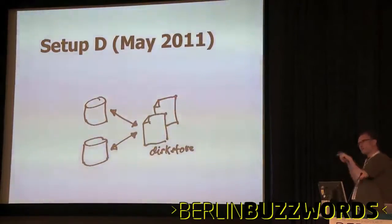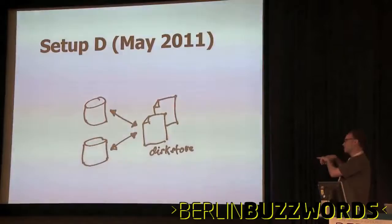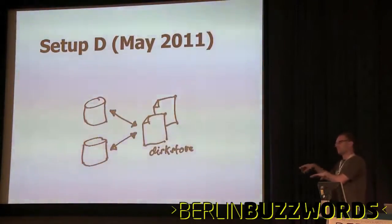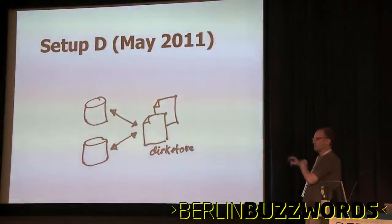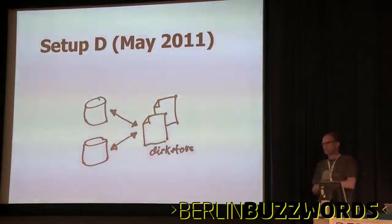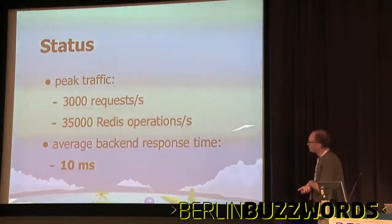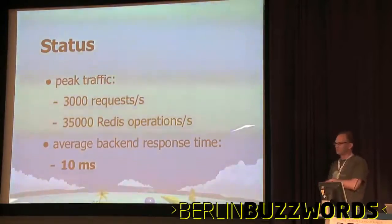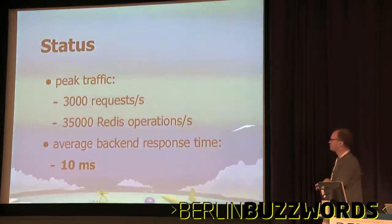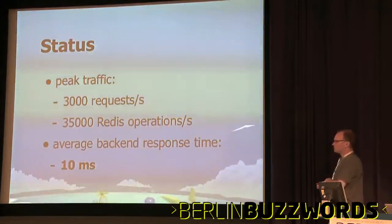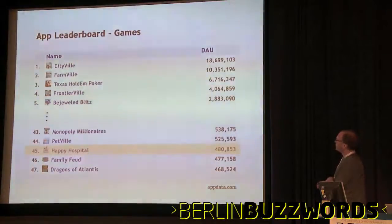Now we have two Redis processes running on the same machine, and they share the same dist store backend — a lot of directories on disk where data gets written. We could easily go to three or four shards on the same machine, or shards on different machines, though syncing data across machines is more difficult. On a good day we do around three thousand requests per second from the Flash client to the backend, translating to roughly 35,000 to 40,000 Redis operations per second — super stable. We can handle backend requests in about 10 milliseconds normally.